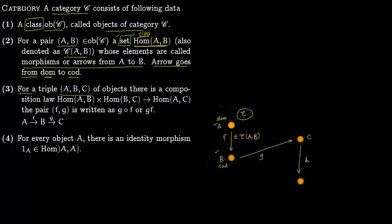Third, for a triple A, B, C of objects there is a composition law: Hom(A,B) composed with Hom(B,C) gives Hom(A,C). That is, given a pair F, G you can compose them — you first apply F and then apply G. And for every object A there is an identity morphism, such as identity on A, identity on B, identity on C.